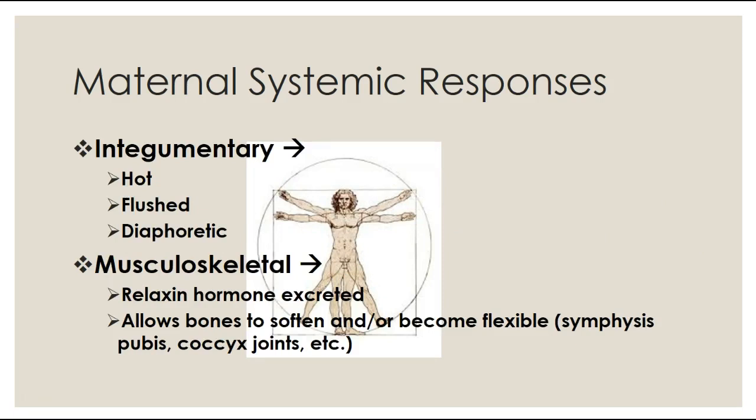Regarding the integumentary system, patients will feel hot, flushed, and sweaty during labor — offer ice chips, a fan, or a cool rag. From a musculoskeletal standpoint, the hormone relaxin softens the symphysis pubis and coccyx joints, allowing the bones to become more flexible so the baby can descend through the passageway.